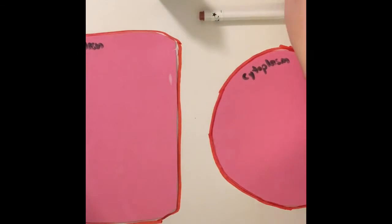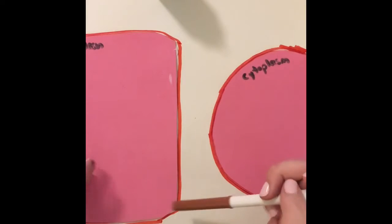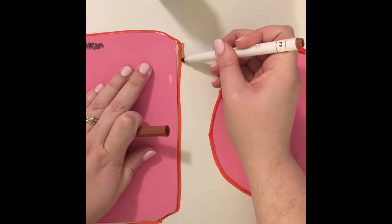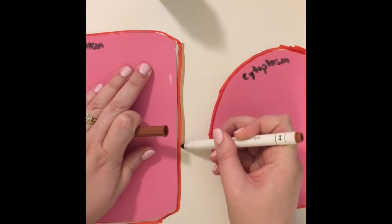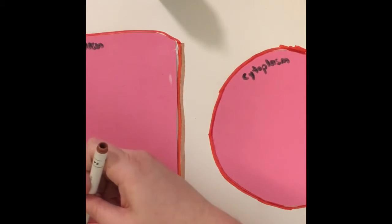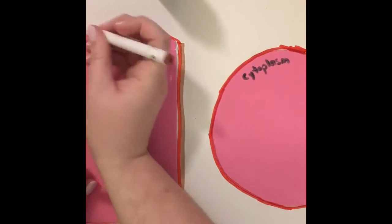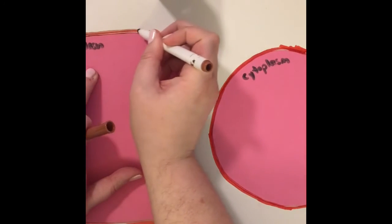Once your cell membrane is done, we'll label it. But for the plant cell, we also have to add a cell wall. So using a different color marker, you're going to go around that cell membrane and draw another border so that we can tell that it is a cell wall. You can make this border darker, bigger, to show that it is something different than the membrane all the way around your plant cell.